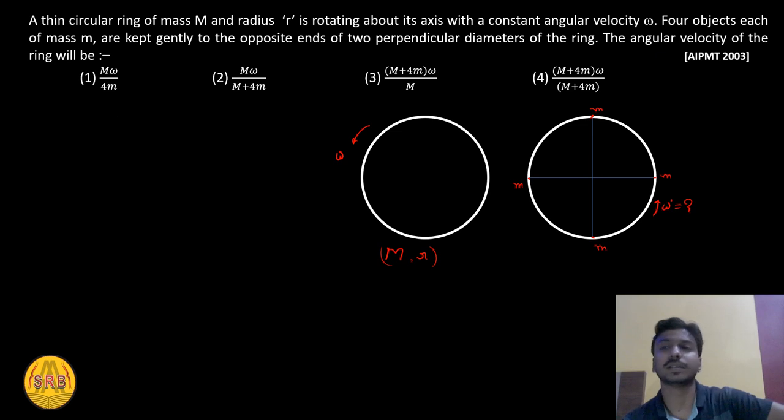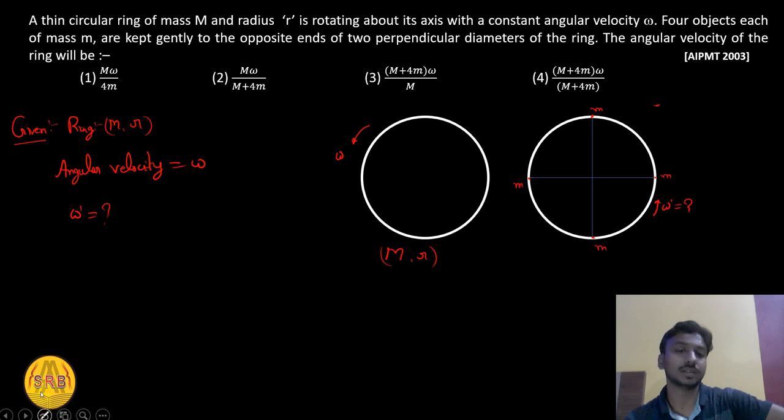Given: A ring with mass M, radius r, and angular velocity omega. Four masses m are to be placed at opposite ends of the perpendicular diameters. We need to find the final angular velocity using conservation of